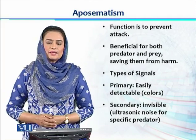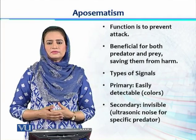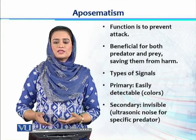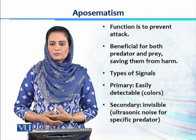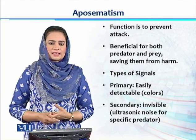Regarding signal types, we divide them into two categories: primary and secondary. Primary signals are easily visible to predators — for example, color patterns and the smells or scents released by the animal's body. These are clearly visible or detectable by predators.